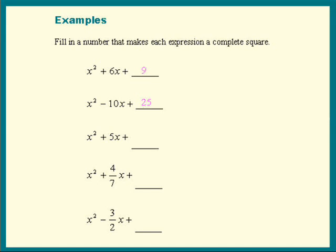The next one. The middle coefficient is 5. Take half of that, we get 5 halves, 5 over 2. Square that, 25 over 4. And that's it.